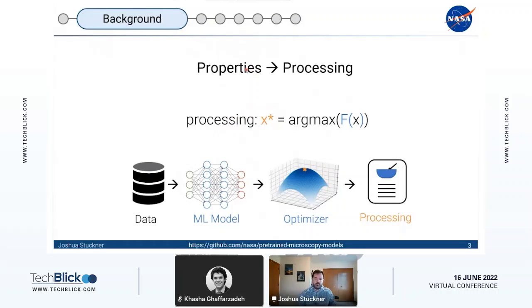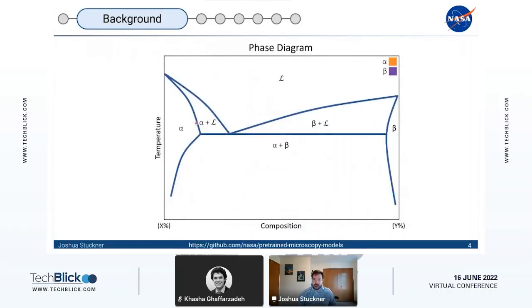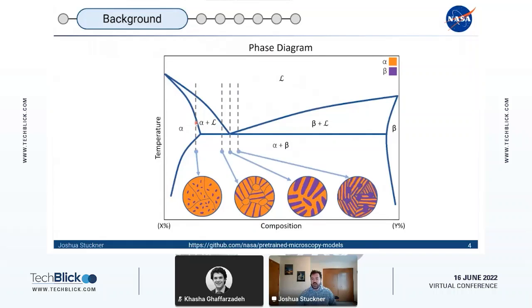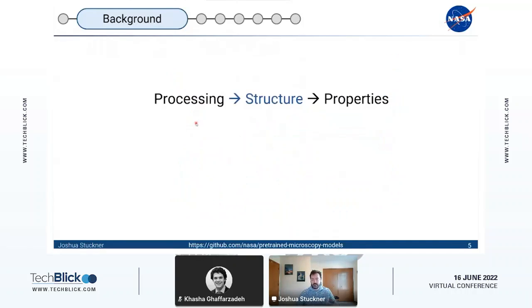But we're missing something here and that's the microstructure. Because for many material systems, small changes in the processing space has sudden discontinuous changes in the microstructure space, which in turn has discontinuous changes in the property space. So if we want to build models that link the processing to properties, we really need to capture the microstructure of the materials to get the full PSP relationships.